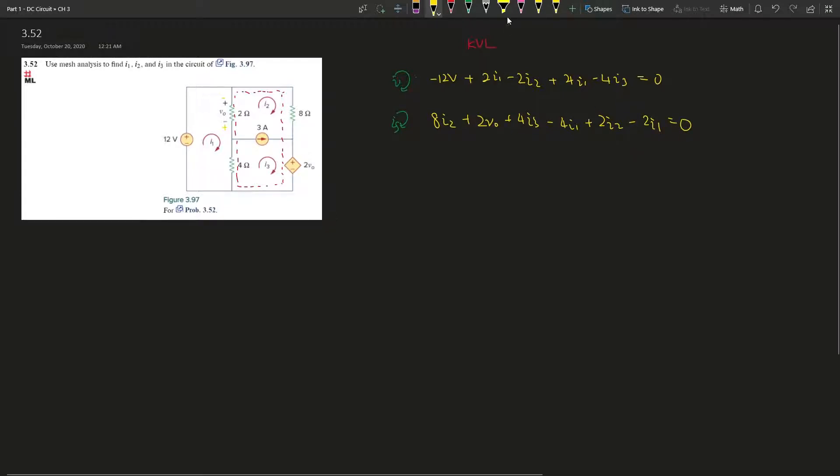All right, so let's simplify this real quick. So for i1, I'll just write it from the bottom over here. So we have 12V. So i1 is 2i1 plus 4i1, so 6i1, minus 2i2 minus 4i3. All right, you divide it by 2 on both sides. It's going to give you 6V equals 3i1 minus i2 minus 2i3.